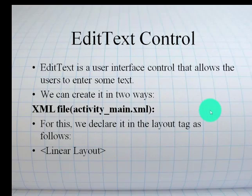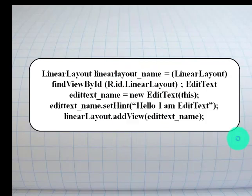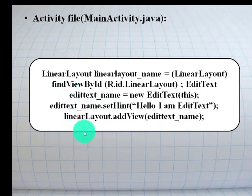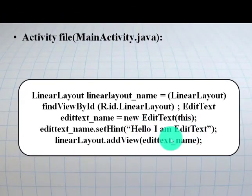Again, there are two ways. First, using an XML file — the same syntax, just replace TextView with EditText. Again, there are attributes and properties used for the EditText. Second way, using an activity file — MainActivity.java. Since the syntax is the same, in this case we only use the EditText class instead of the TextView class, and add that EditText on the layout. The text in EditText is entered by the user, therefore here we are not calling setText(). We are just setting the hint. The hint indicates the purpose of this EditText — for example, 'Hello, I am an EditText' as the hint.